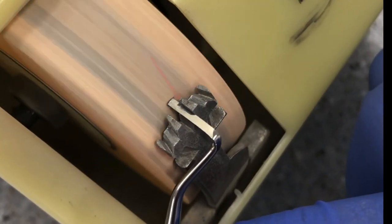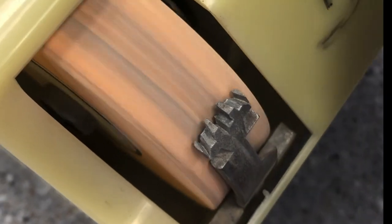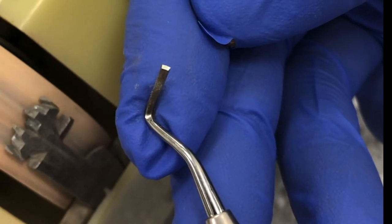Using light and even pressure, you'll notice a small amount of filings being created from the sharpening of the edge. Periodically remove the instrument from the sharpening machine to ensure that the blade is being sharpened in the right angulation.